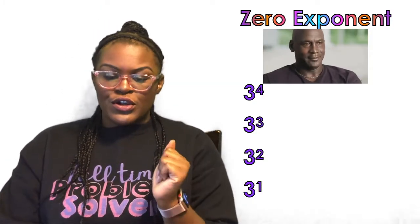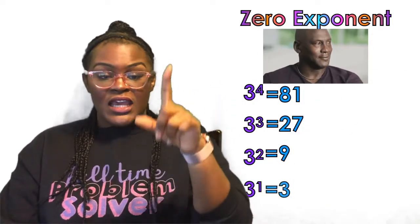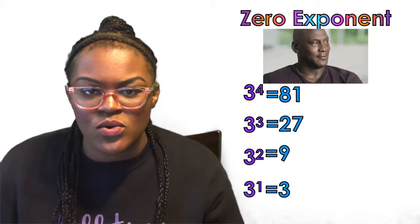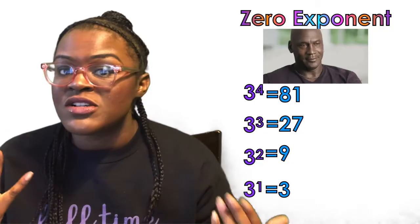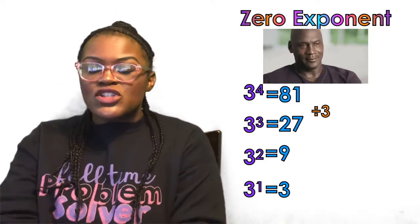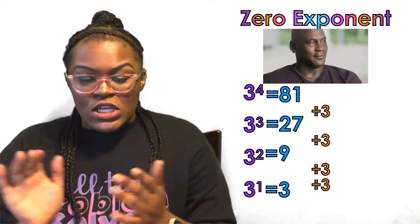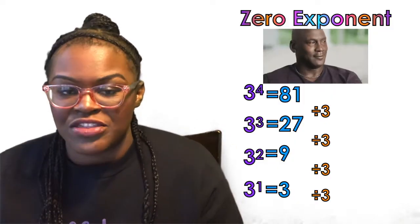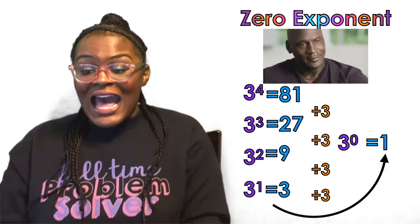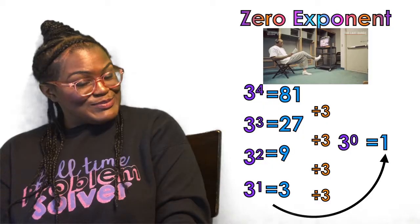Three to the fourth, three to the third, three squared, and three to the first: 81, 27, 9, and 3. The pattern here is dividing by three — 81 to 27, 27 to 9, 9 to 3. So of course I take that 3 and divide it by three, and three to the zero power equals one again.